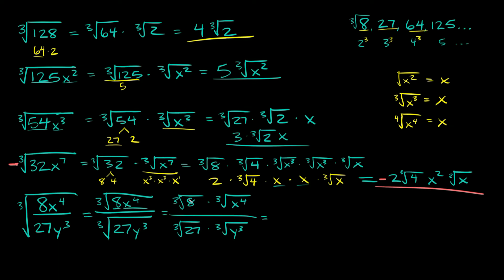The cube root of 27 times the cube root of 2, and then the cube root of x cubed, which equals just x. On top: the cube root of 8 is a perfect cube equal to 2. For the cube root of x to the 4th, break it into x cubed times x, giving cube root of x cubed times cube root of x. On bottom: the cube root of 27 equals 3, and the cube root of y cubed equals just y.